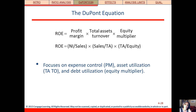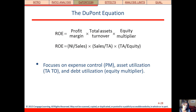Profit margin is measuring profitability, total asset turnover is measuring asset utilization, and equity multiplier is measuring debt utilization. So if you look at the trend in ROE and then look at the trend in the components, you can see which component is driving the change in ROE over time or the differences in ROE between a firm and its peers or its industry.